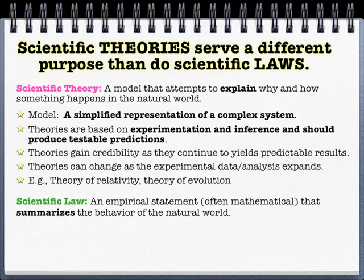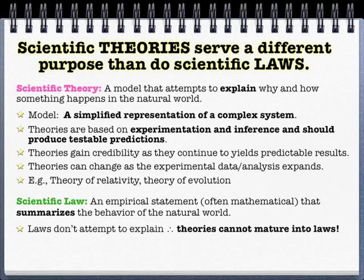A scientific law, on the other hand, does something completely different. A scientific law is an objective, empirical statement that summarizes the behavior of the natural world, and it's not open to interpretation. Since laws are not trying to explain, theories don't mature into laws. A lot of people think that if a theory eats its vegetables and works out and is a good little kid, someday it's going to grow up and get to be a law — but that simply is not the case.